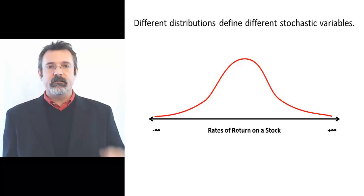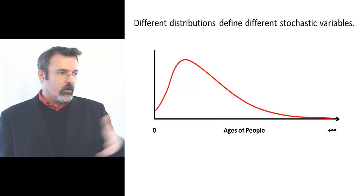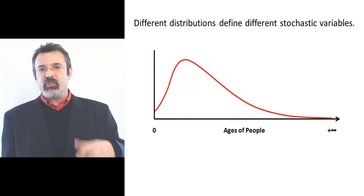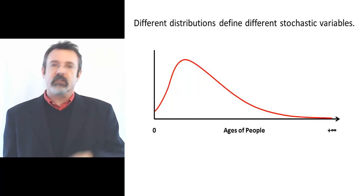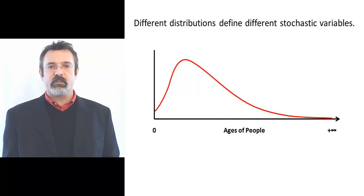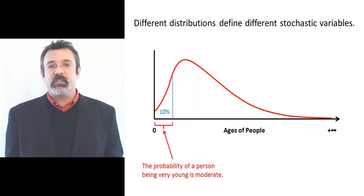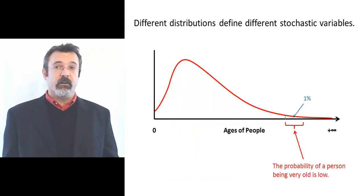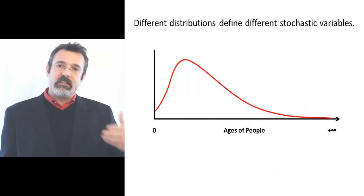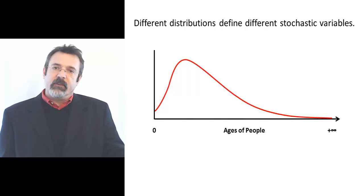Take a look now at the stochastic variable that measures ages of people. People can range anywhere from zero up to some large age. Because ages can't be negative, the probability distribution for ages of people is going to look different than the probability distribution for rates of return on stocks. For example, the probability of a randomly selected person being a very young age is 10%, being a teenager is 15%, and being very old is perhaps only 1%.